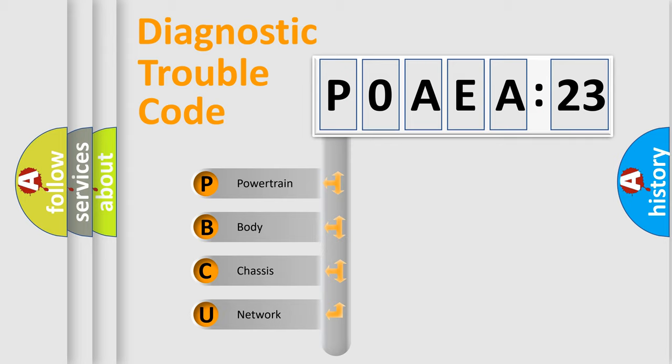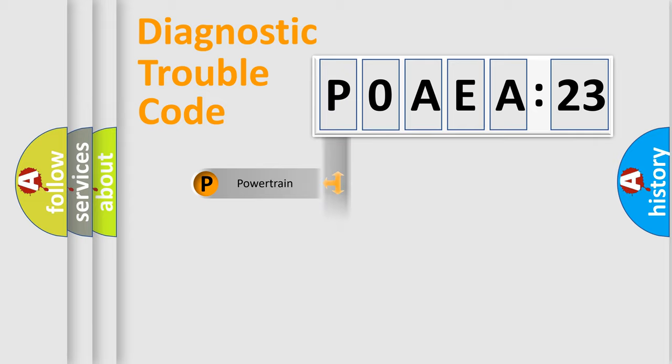If the second character is expressed as zero, it is a standardized error. In the case of numbers 1, 2, 3, it is a manufacturer-specific expression of the car-specific error.